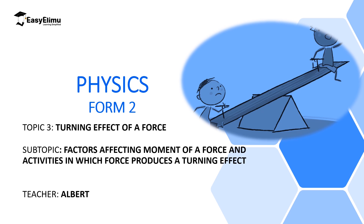Welcome to ECLIMU Learning Simplified. In the previous lesson we discussed moment and defined it as a turning effect of a force. We also discussed moment of a force, which we defined as the product of a force and the perpendicular distance from the pivot. In this lesson we want to discuss factors which affect moment of a force, and then look at activities in which a force produces a turning effect.